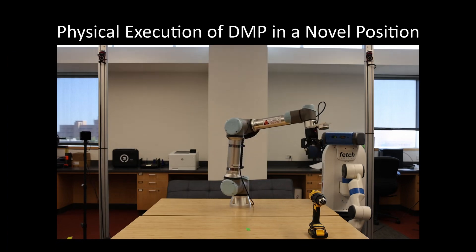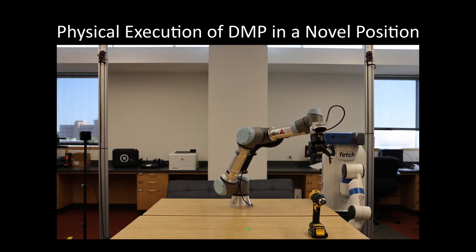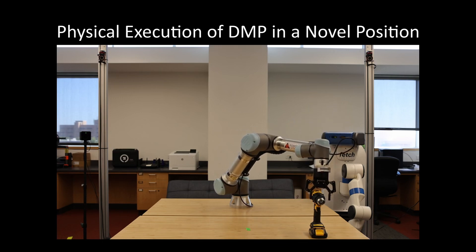The trained dynamic movement primitives, or DMPs, were able to learn from our VR-produced data. Execution was evaluated on an identical physical robot.